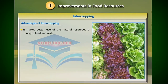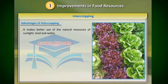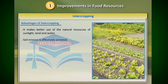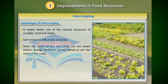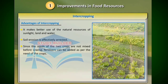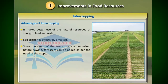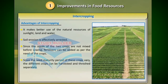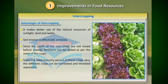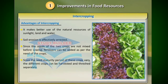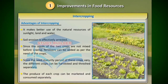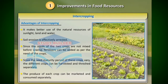Advantages of intercropping: it makes better use of natural resources such as sunlight, land, and water. Soil erosion is effectively arrested. Since the seeds of the two crops are not mixed before sowing, fertilizers can be added as per the specific need of each crop. Since the seed maturity periods of these crops vary, the different crops can be harvested and threshed separately. The produce of each crop can be marketed and consumed separately.